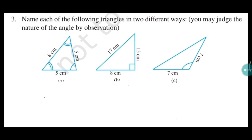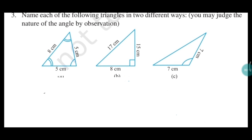Now this is question number three of the same exercise. We have to name each of the following triangles in two different ways — by the observation of angles and by the observation of sides. So we have to write two ways: according to sides and according to angles.